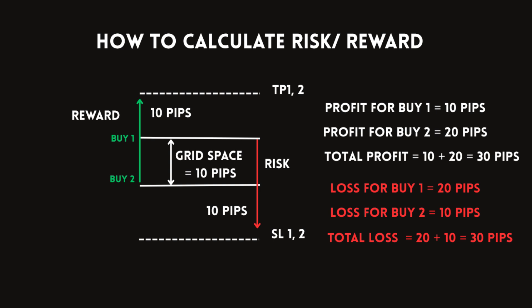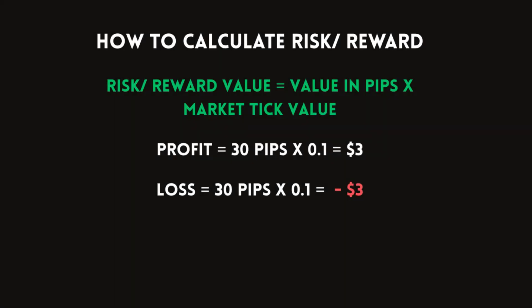For the take profit, the spacing from buy order one to take profit is 20 pips, giving you two dollars. For buy order two the distance to take profit is 30 pips. You can actually increase this if you want. This is how you calculate the stop loss and take profit — know the distance between the take profit and the first order, between the take profit and each buy order, then do the same for the stop loss. This is how you calculate the take profit, the reward and the risk for any grid strategy.